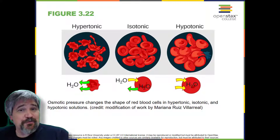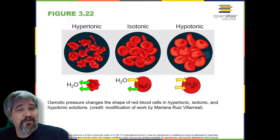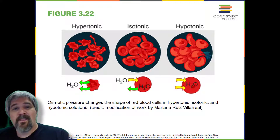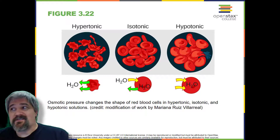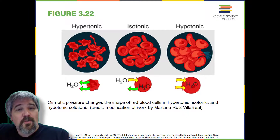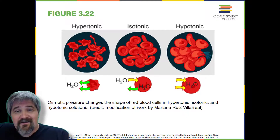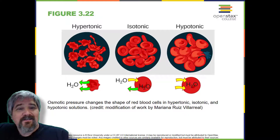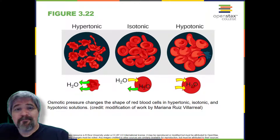In a hypertonic solution, the prefix hyper refers to the extracellular fluid having a higher concentration of solutes than the cell's cytoplasm. The fluid contains less water than the cell does, such as seawater. Because the cell has a lower concentration of solutes, water will leave the cell. In effect, the solute is drawing the water out of the cell. This may cause an animal cell to shrivel or crenate. That's why you don't drink salt water, just by the way.